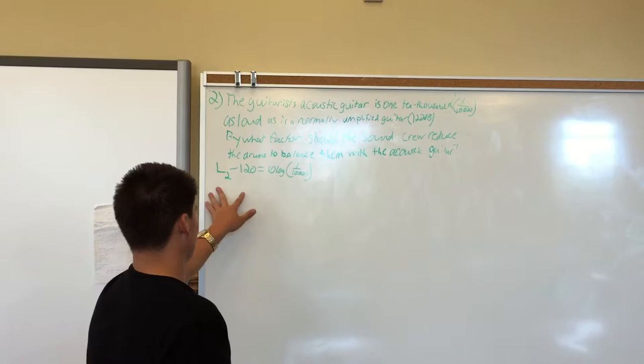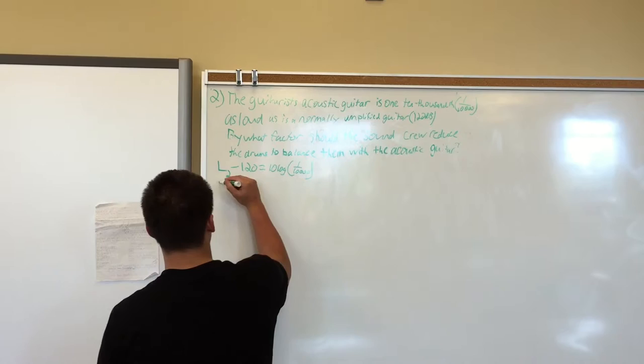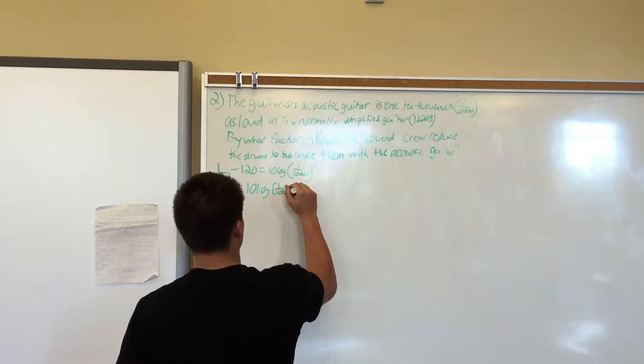What we do here is isolate L2 by bringing the negative 120 to the other side, and it becomes plus 120. So that becomes L2 equals 10 log 1 over 10,000 plus 120.